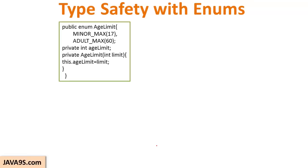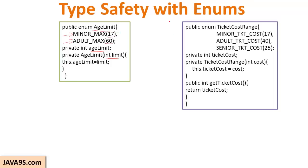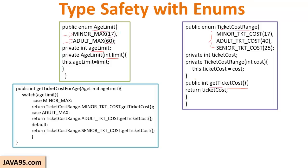Now let us see how type safety is actually achieved with enums. I have an AgeLimitEnum for which I am declaring two constants with ages specified, taking the age in the constructor and setting it. I also have another enum class for ticket ranges for these ages, and a getTicketCost method which returns the ticket cost for a particular constant. In a program, I decide what age a person is and return what the ticket cost should be — getting the age limit from AgeLimitEnum and passing this to a switch case.